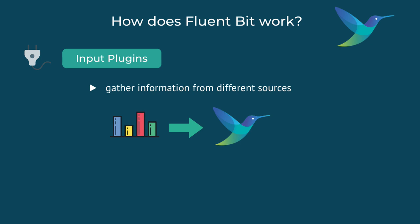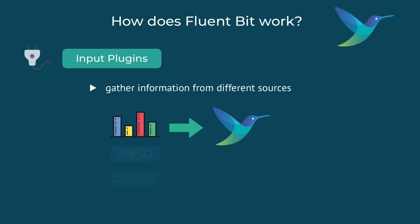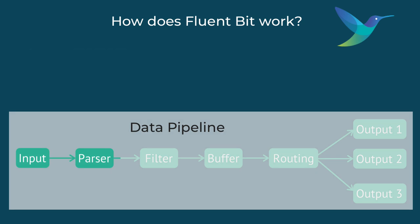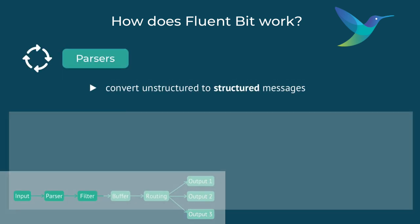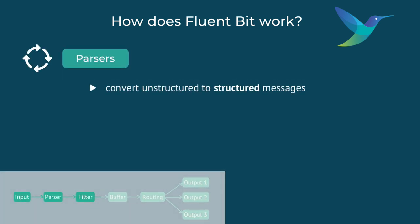FluentBit also has input plugins for metrics data collection. For example, it supports StatsD and collectd input plugins, but also supports collecting metrics on the host systems — CPU, memory, and disk. Once logs are collected and read, FluentBit will process them, and depending on the log format, we would need to parse them differently.